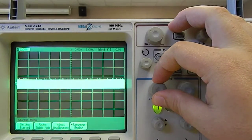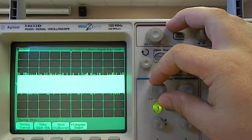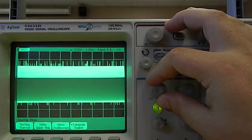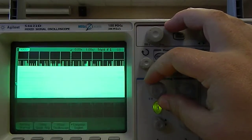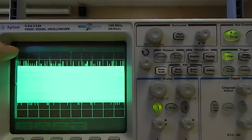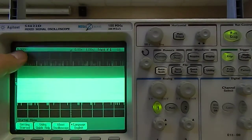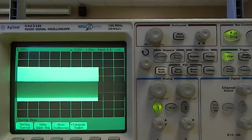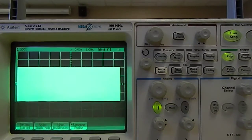And we want to turn it so that each of these divisions represents, in this case, 500 millivolts. That's what you can see in this upper corner. Now, that fixes the vertical scale problem.